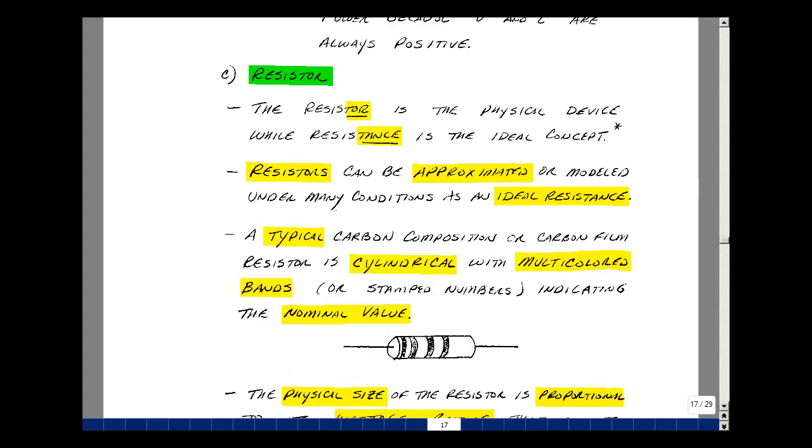Now resistance is the ideal concept in Ohm's law. There is a thing called a resistor, which is the actual device. Resistors can be approximated or modeled under many conditions as an ideal resistance. Typically they're made out of carbon, either carbon composition or carbon film, usually in cylindrical form with multicolored bands painted on them. It indicates the nominal value. We'll address this in the lab part of the course.